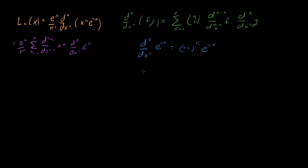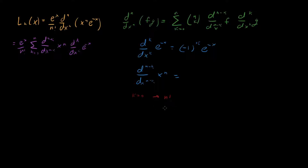Now the harder one: the (n minus k)th derivative of x to the n. Let's work through some examples. For k equals 0, we're taking the nth derivative of x to the n, which differentiates all the way down to 1, giving us n factorial. For k equals 1, we take n minus 1 derivatives, so n drops down to 1 and we have an x left, multiplied by n factorial.